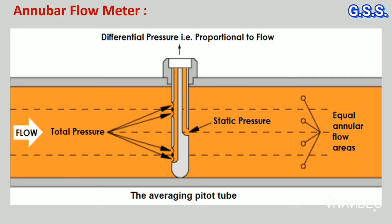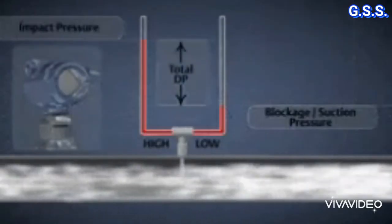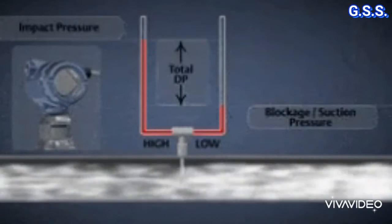Working principle of pitot tube and anubar is almost the same. The only difference is anubar takes multiple samples across the pipeline, and anubar averages the differential pressure for variation of flow across the pipeline.